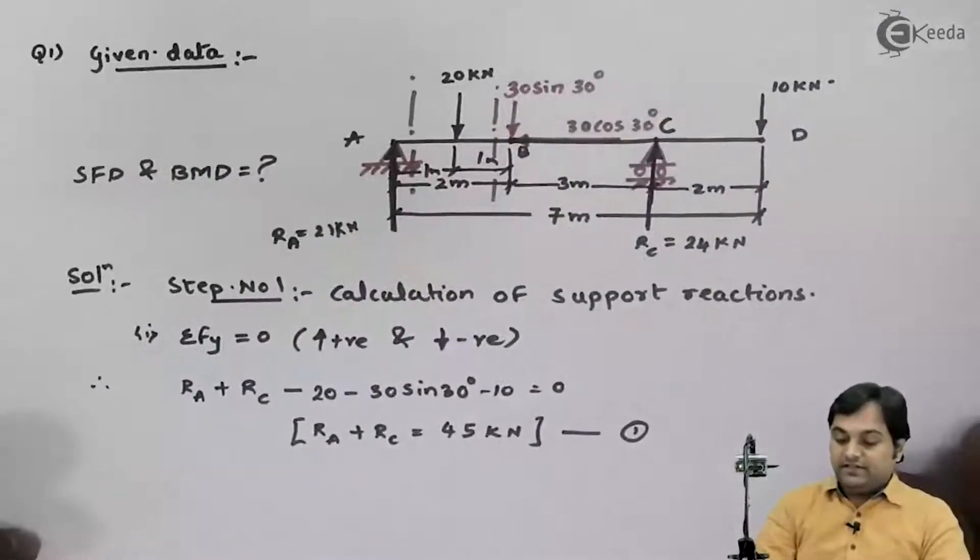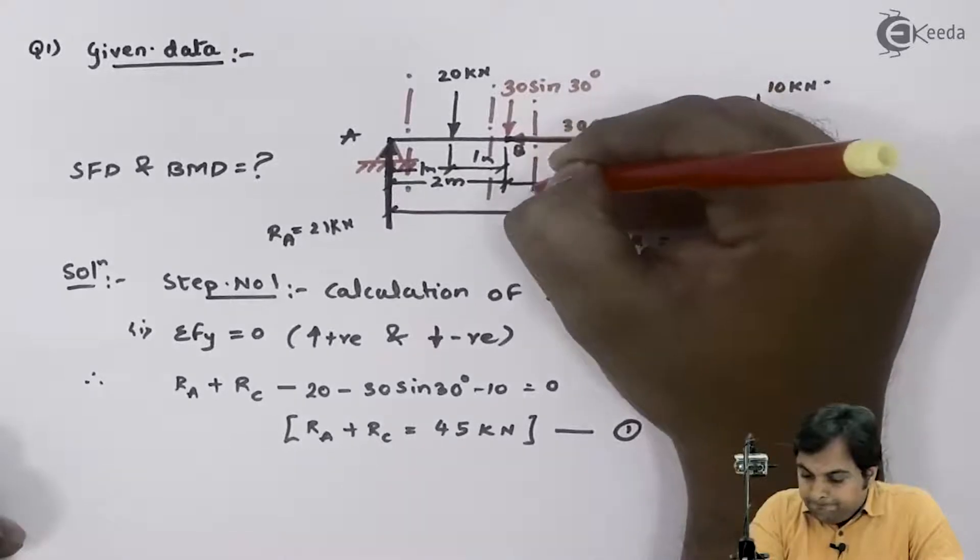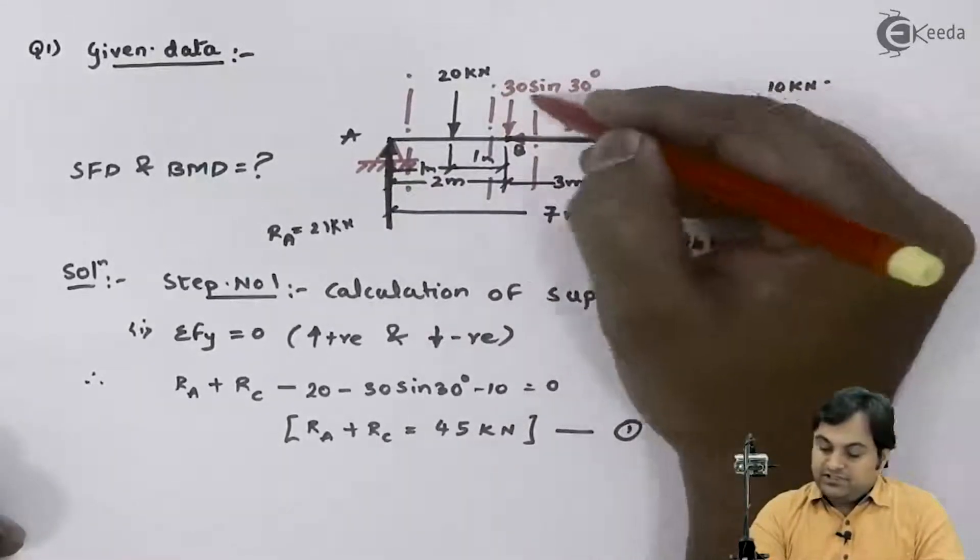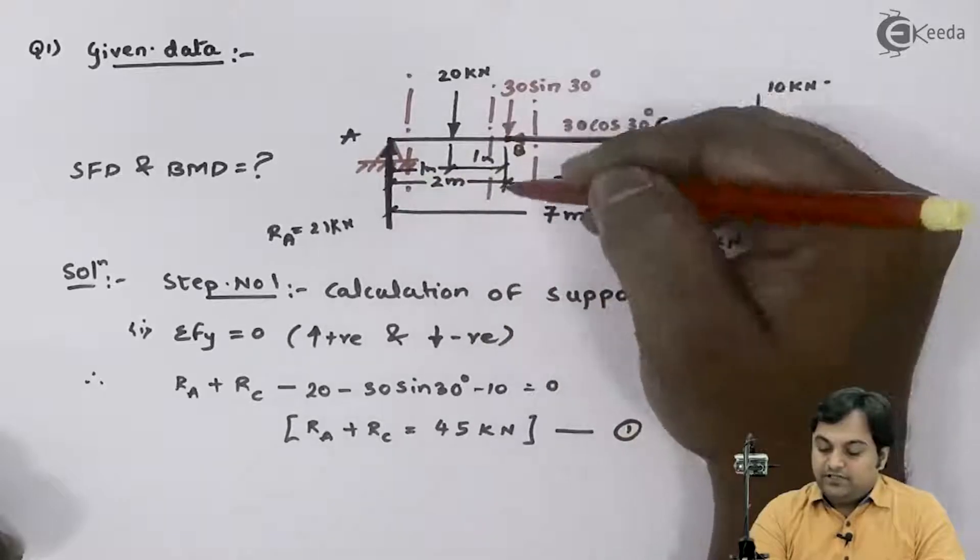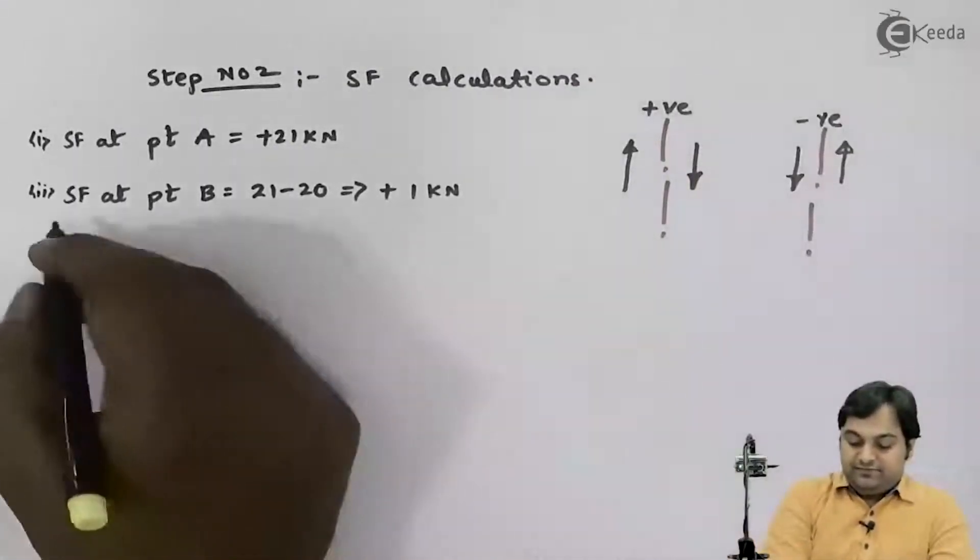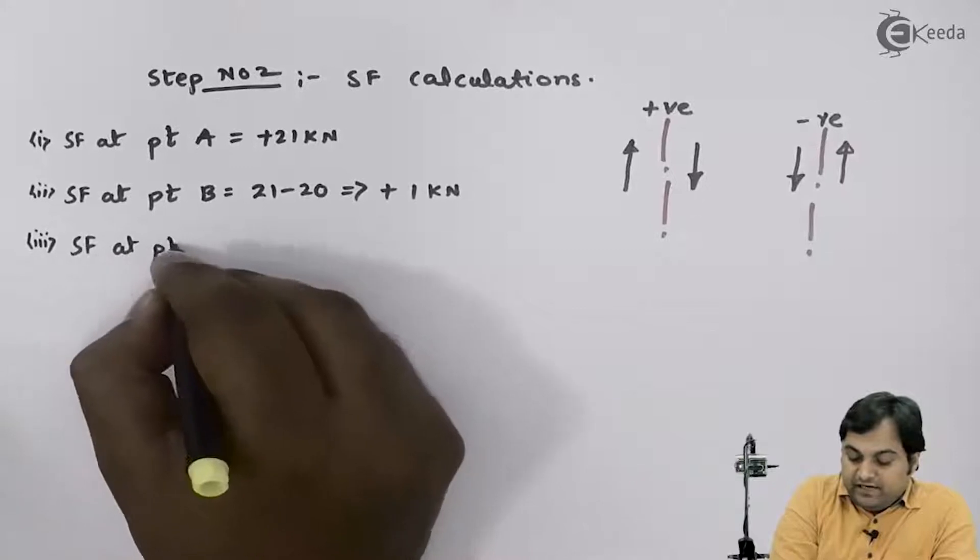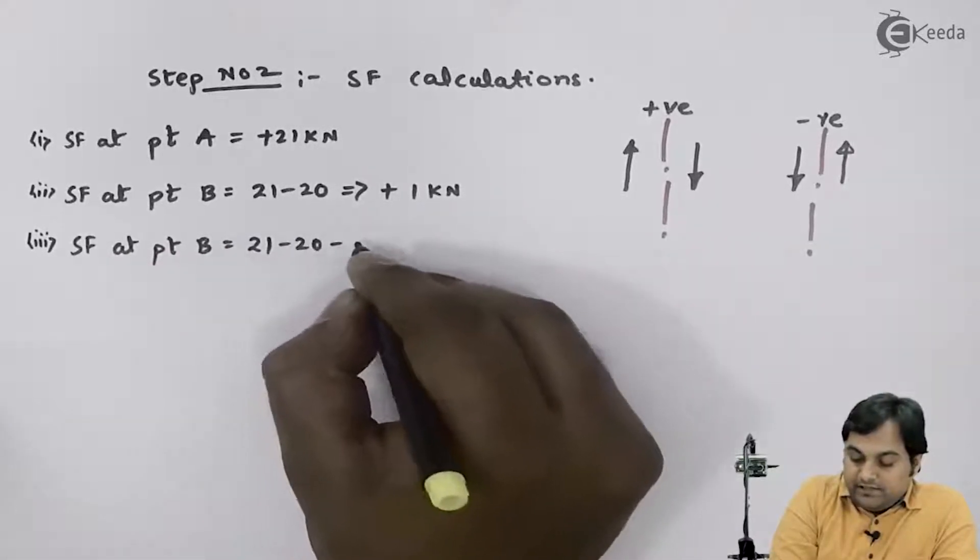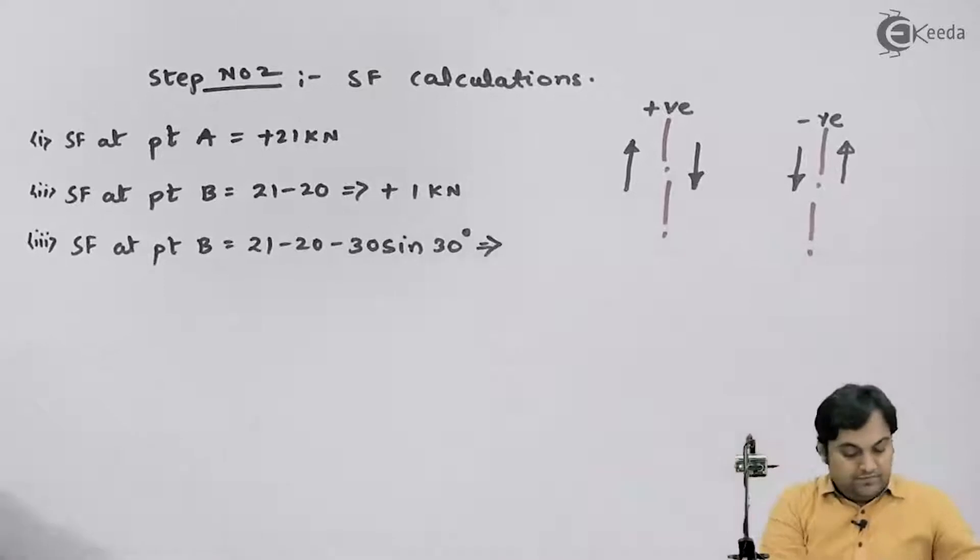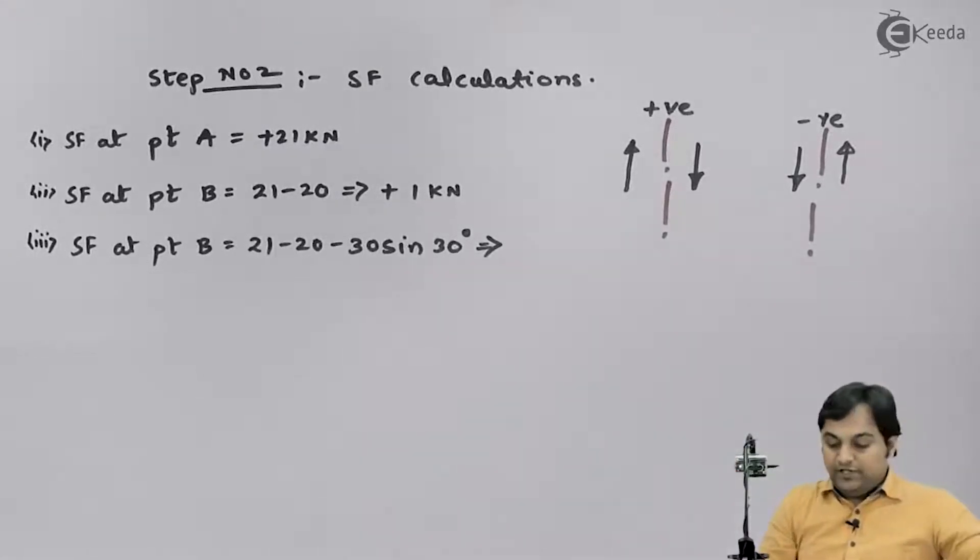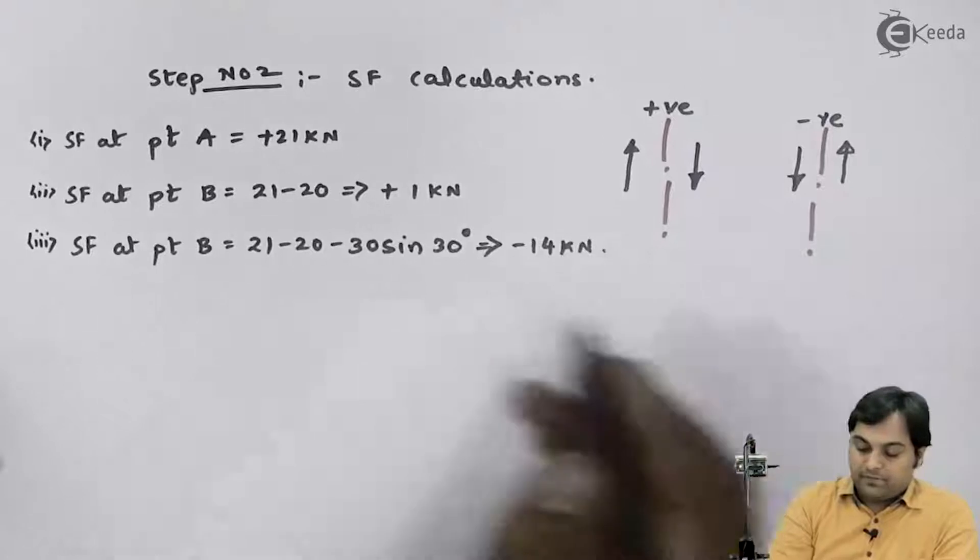Next I will take the section just to the right of B so that I even have this 30 sine 30. At point B, the value of shear force will be RA 21 minus 20 minus 30 sine 30. So we have again SF at point B equals 21 minus 20 minus 30 sine 30 degrees, so my answer will be minus 14 kilonewton.